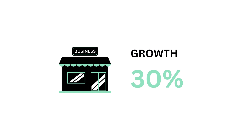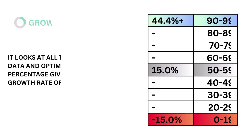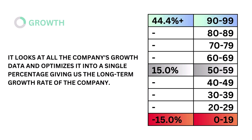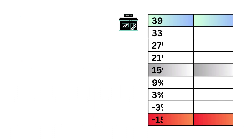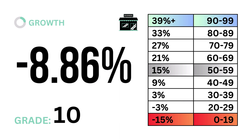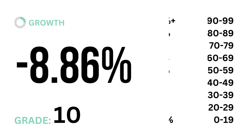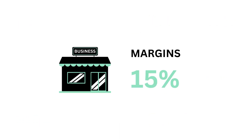First, growth, which accounts for 30% of the business factor. Growth looks at all the company's growth data and optimizes it into a single percentage, giving us the long-term growth rate of the company. The models tell us that a growth rate of 15% is considered average. Here's our long-term growth rate and growth grade.